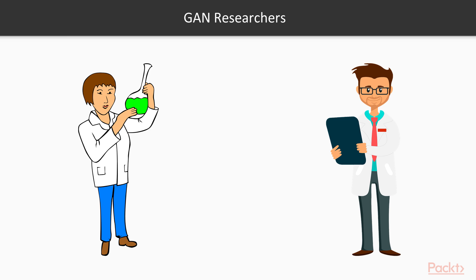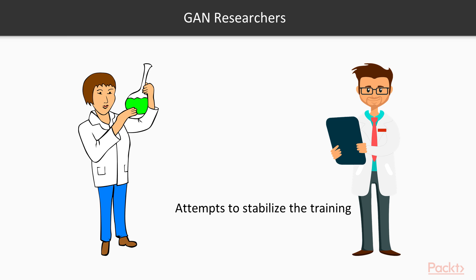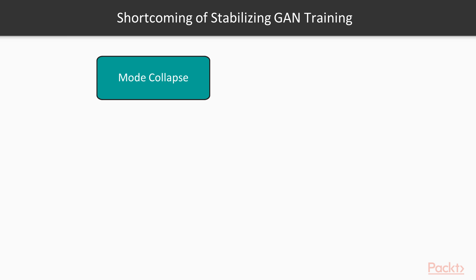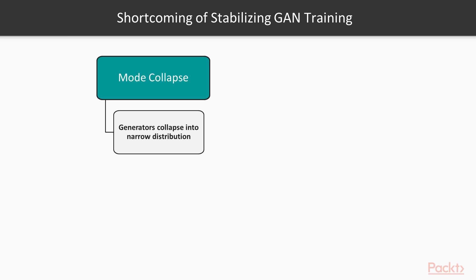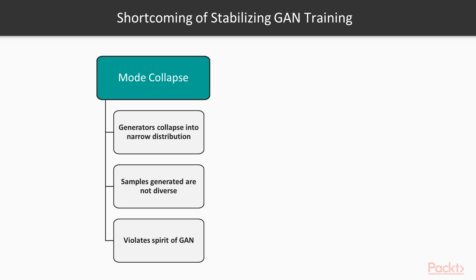Let's stabilize training with Boundary Equilibrium GAN. The popularity of GAN is rising rapidly among machine learning researchers. GAN research can be categorized into two types: the first applies GAN to challenging problems, and another attempts to stabilize the training. Stabilizing GAN training is very crucial as the original GAN architecture suffers several shortcomings. Some of these are mode collapse and evaluation of convergence metrics. Mode collapse is where generators collapse into a very narrow distribution and the samples generated are not diverse, which violates the spirit of GAN.